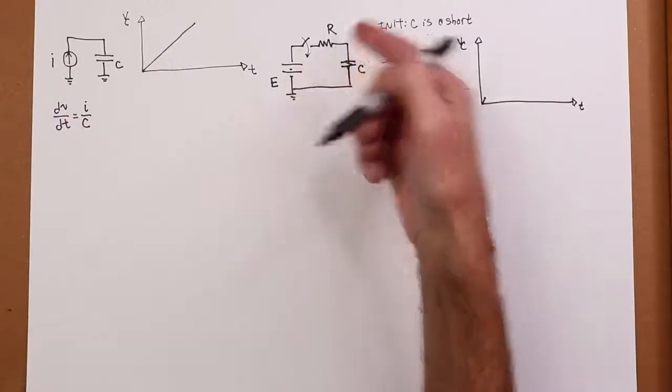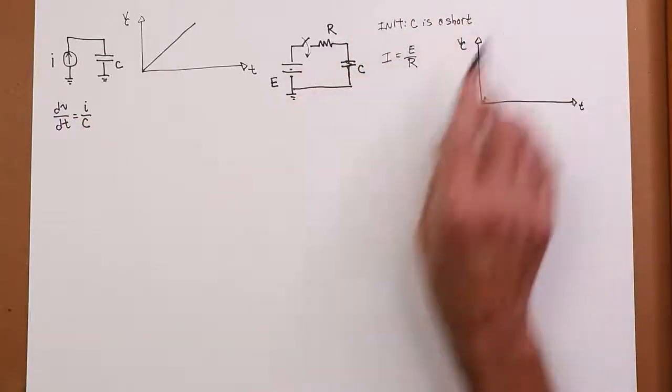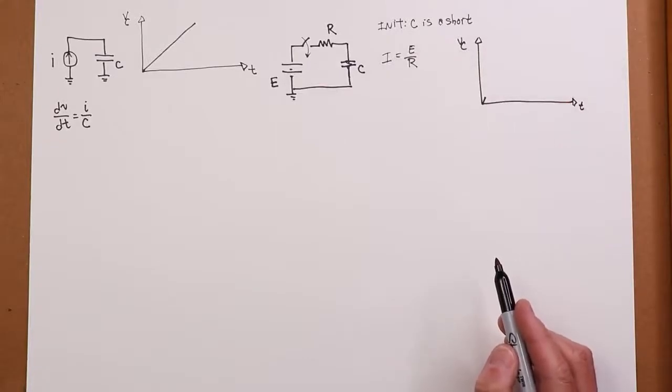So, big voltage, small R, we get a big current. This change is going to be very, very quick.